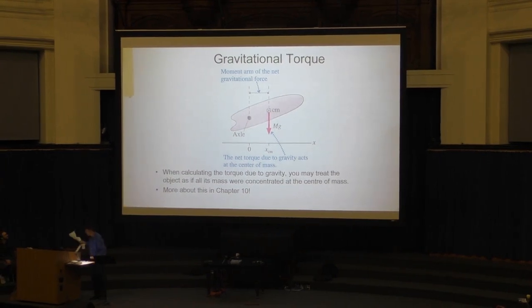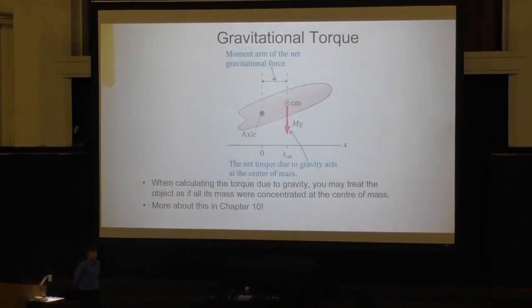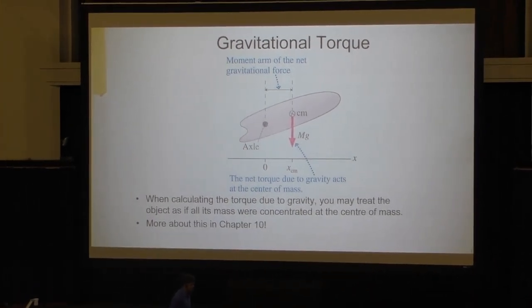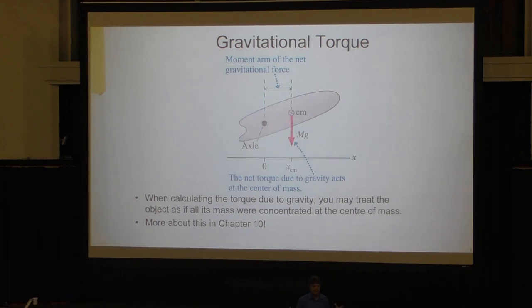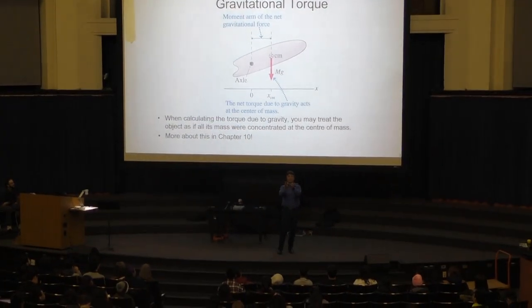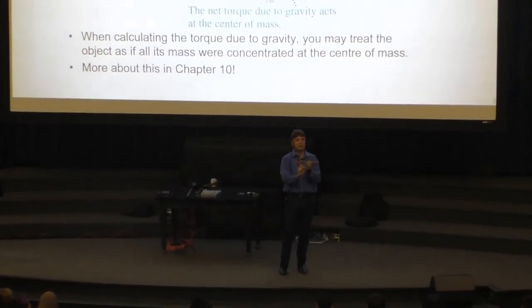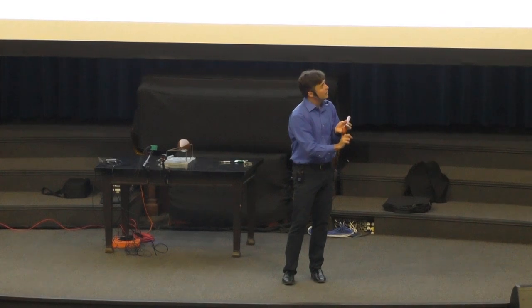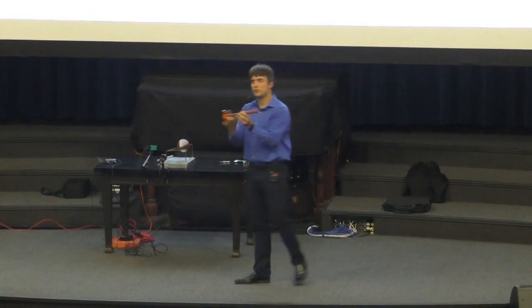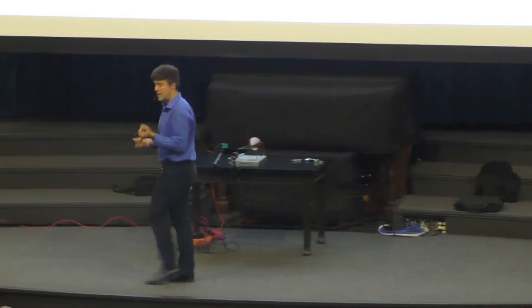There's something called gravitational torque, which will come up a lot in Chapter 10 on rotation and torque. When you have an object and want to find the torque due to gravity, you need to know where gravity acts. In reality gravity acts on every point, but for torque problems you can pretend gravity is a hook pulling on the center of mass and get the correct answer. When calculating torque due to gravity in Chapter 10, you may treat the object as if all its mass is concentrated at the center of mass.